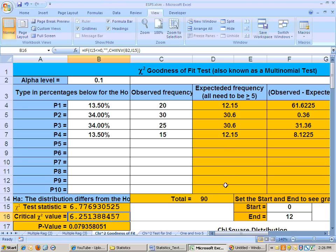Here's your expected numbers. All these have to be greater than or equal to 5 for you to run this test. Remember the n times p has to be greater than or equal to 5. There's what we're looking for there.